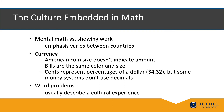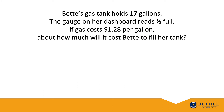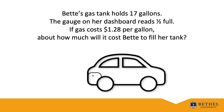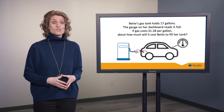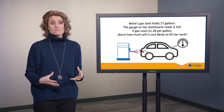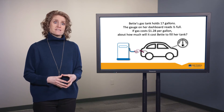Let's take a peek at a specific word problem: Betty's gas tank holds 17 gallons. The gauge on her dashboard reads half full. If gas costs $1.28 per gallon, about how much will it cost Betty to fill her tank? What cultural background might we need to build for our ELs here? Well, we might need to explain that this story is about a car, explain the terms gas tank, gauge, and dashboard with some visuals, and explain how much a gallon represents in comparison to a liter. Perhaps we would even clarify that Betty is the name of a woman. In the end, we might choose to simply rewrite the story in the context of a bakery, a grocery store, or some other familiar context that exists in most cultures.